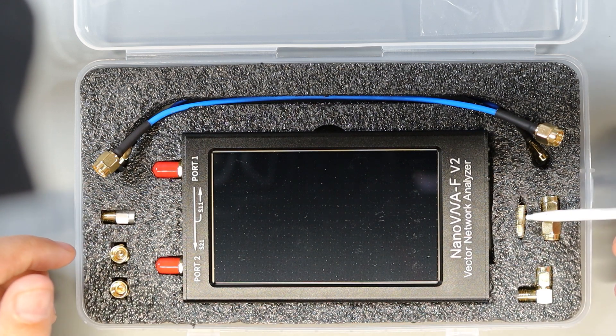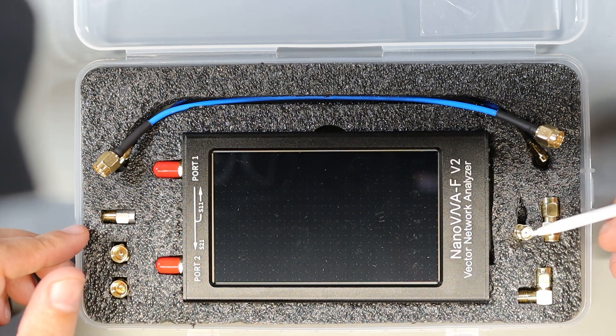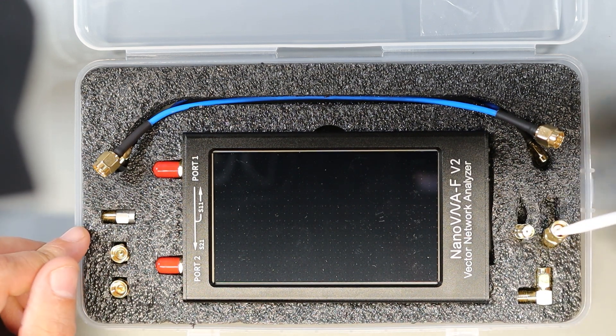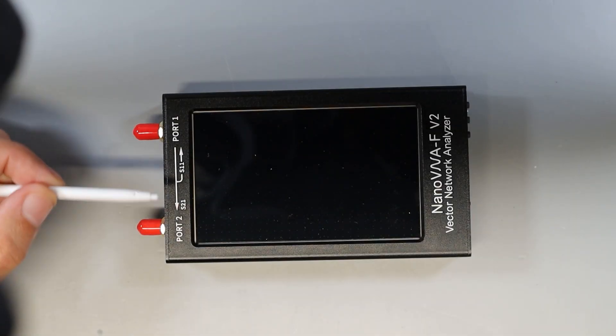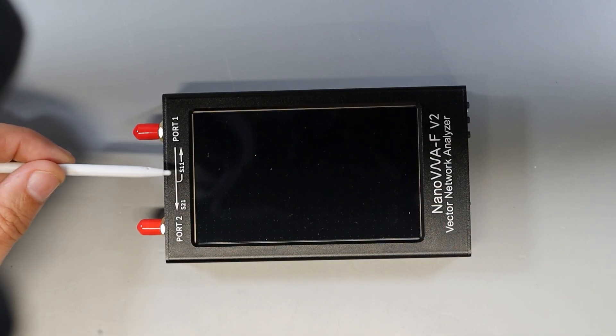And then over here we get some adapters. This is a female to female coupler, a male to male coupler, and then a right angle female to male. Of course we get the two ports over here on the left. Port 1 or the S11 port is up here on top and port 2 or the S21 port is on the bottom.